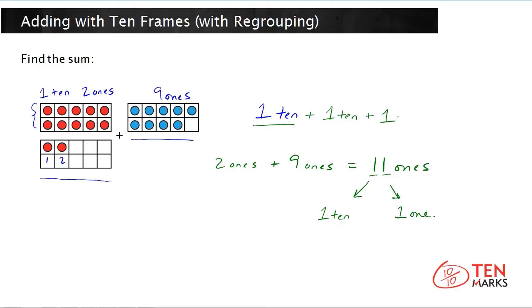And you can see here that you have one ten plus one ten, and that's two tens. And what you have left over is one one.